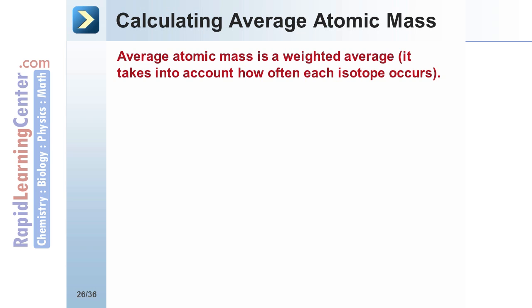Average atomic mass is a weighted average. It takes into account how often each isotope is present.